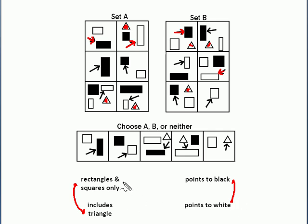And once again, we compare these up. If we've got rectangles and squares only and points to black, that's what we see occurring in set A. But also, if we've got includes triangle, it will point to white. So that's also a set A.